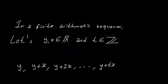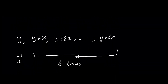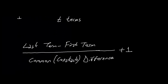Let's continue with the fourth formula of the video. We want to explain the reason for the number of terms formula in a finite arithmetic sequence. Let's give an example. Let y and x be real numbers and t be an integer. Be careful — y and x don't have to be integers. This is our example finite arithmetic sequence. As you can see, from the second term to the last term there are t terms, and on the other hand there is a first term. We can write t plus 1 in terms of the last term, first term, and common difference as: last term minus first term over common difference, plus 1.